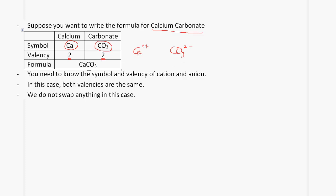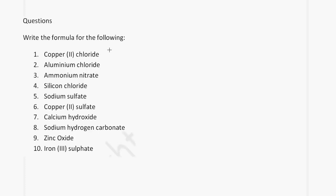We have a few practice questions. Copper(II) chloride: copper is Cu, chloride is Cl. The valency of copper is 2 and chloride is 1, so we swap to get CuCl2. Aluminium chloride: aluminium is Al, chloride is Cl. Aluminium has a valency of 3 and chloride has a valency of 1, so we swap to get AlCl3.